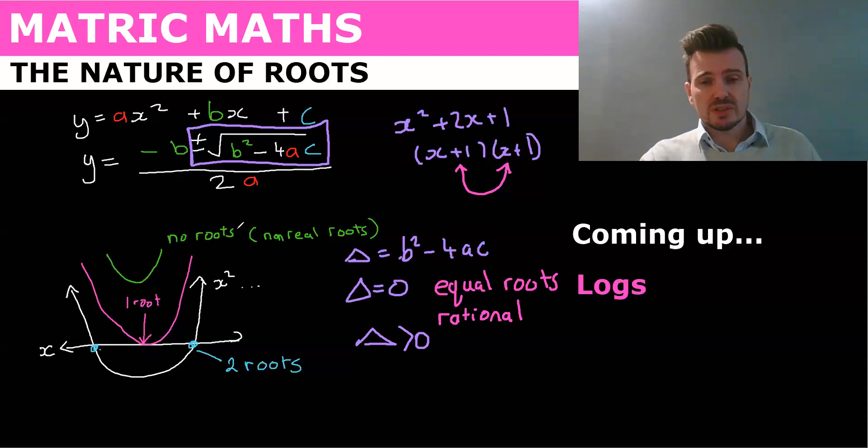This is why when we did our real number system, so that we could look at what a rational and irrational number is. So if delta is greater than zero and a perfect square, it's real and rational.